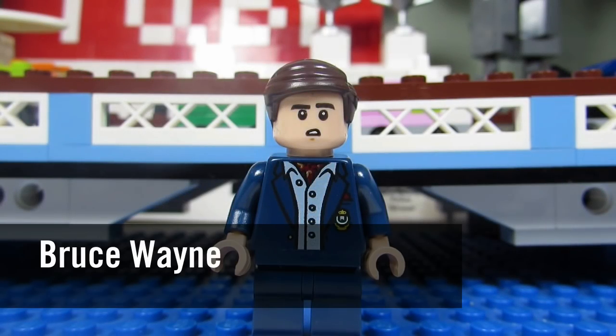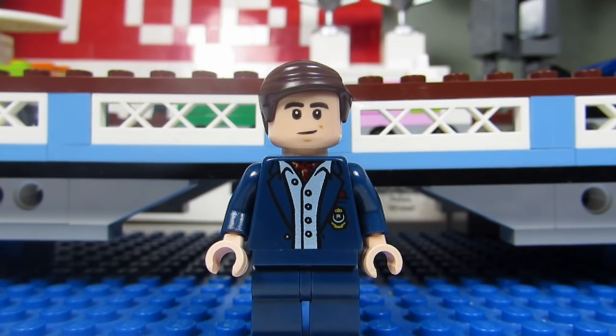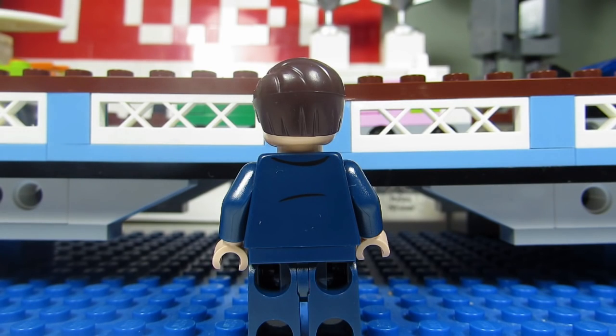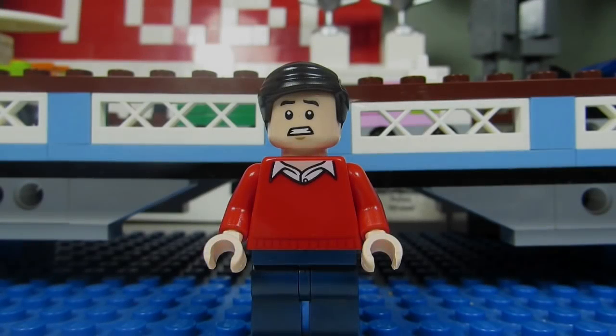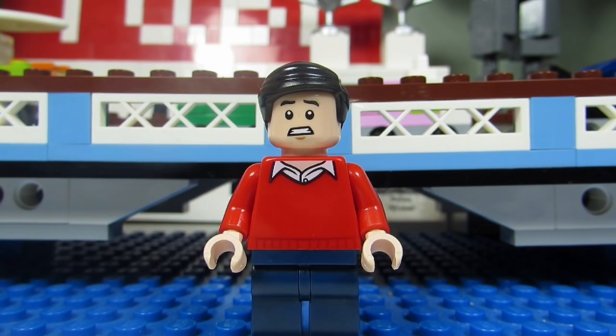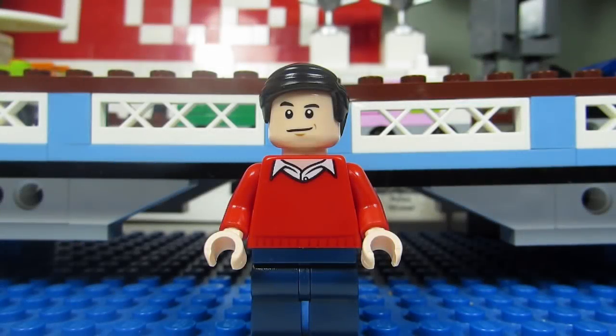Next up we have Bruce Wayne, a great looking minifigure here. I love his torso with the blazer and he has a scarf underneath his shirt, looks really posh. He does have an alternate face where he is just looking straight ahead but no back torso printing, just looking ordinary, bit of a crease there. And here's Dick Grayson, a bit of a boring minifigure. The shirt is just red, the collars are coming out which are kind of cool. And from behind nothing special at all. Dick Grayson also has an alternate face where he is just staring straight.